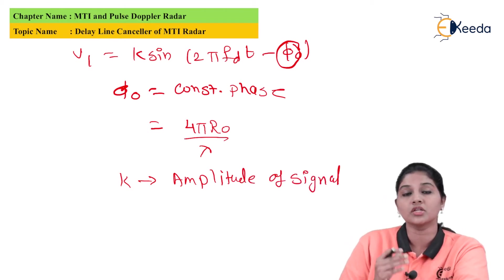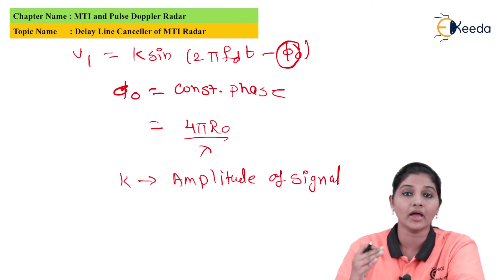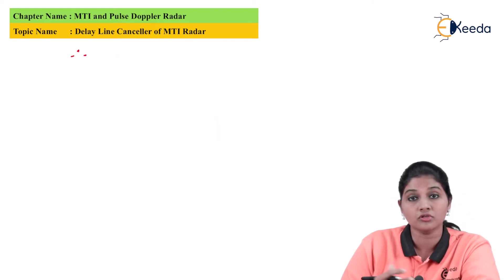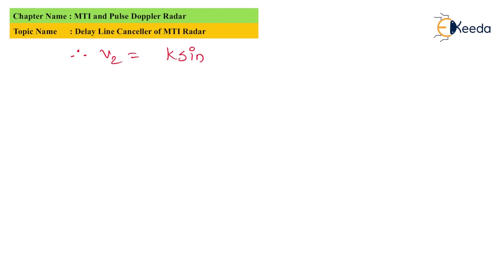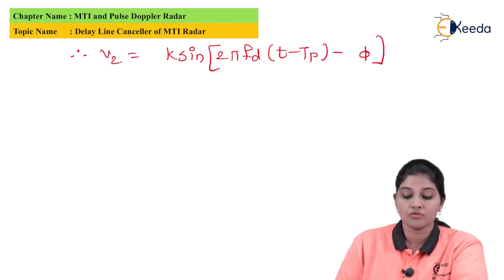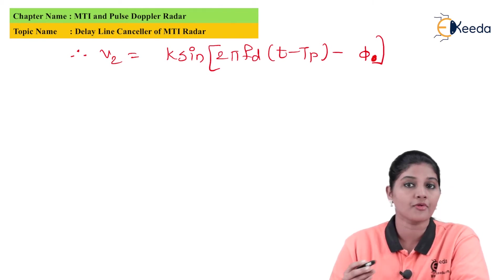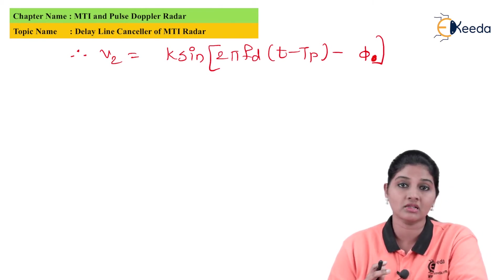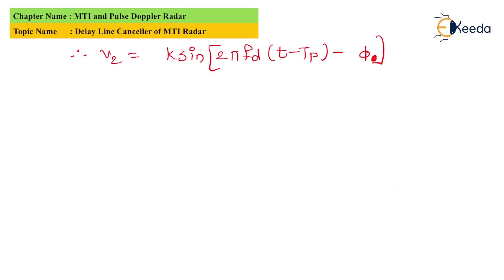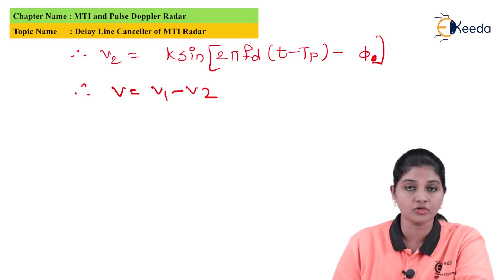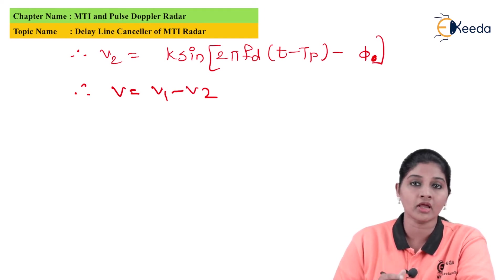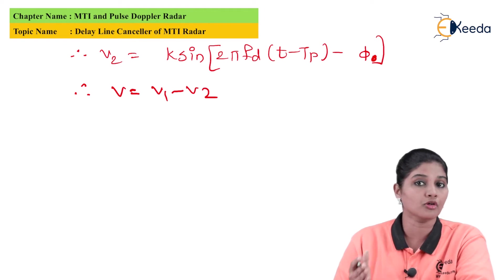Assuming the signal from the previous transmission is delayed by a pulse period tp, the delayed signal is given by: v2 = k·sin(2π·fd·(t − tp) − φ₀). The delay line canceler subtracts the two signals, so we obtain v = v1 − v2. We substitute the values of v1 and v2 to obtain the final output of the delay line canceler.